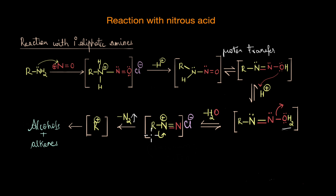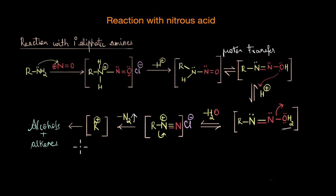This alkyldiazonium salt is highly unstable and immediately decomposes, releasing nitrogen gas and forming a carbocation in the process. Having a carbocation intermediate means there is a high chance of ending up with a mixture of products — alcohols as well as alkenes. Alcohols are usually formed when water is in excess and acts as a nucleophile; alkenes are the major products under dehydrating conditions such as low water concentration or higher temperatures. If the R group is highly branched, there is also a very high chance of carbocation rearrangement.